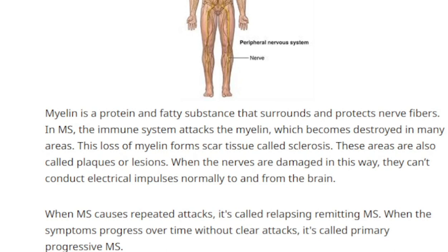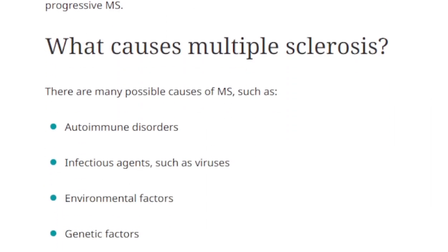The loss of the myelin forms scar tissue called sclerosis — also called plaques or lesions. When the nerves are damaged in this way, they can't conduct electrical impulses normally to and from the brain. When MS causes repeated attacks, it's called relapsing-remitting MS. When symptoms progress over time without clear attacks, it's called primary progressive MS. There are many possible causes: autoimmune disorder, infectious agents such as a virus, environmental factors, and genetic factors.